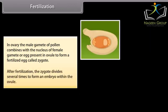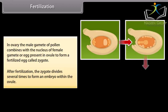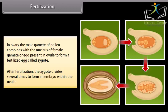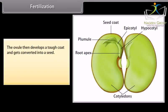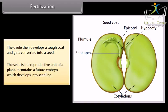After fertilization, the zygote divides several times to form an embryo within the ovule. The ovule then develops a tough coat and gets converted into a seed. The seed is the reproductive unit of a plant. It contains a future embryo which develops into seedling.